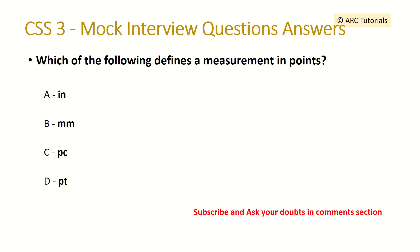Which of the following defines a measurement in points? The options given are: in, mm, pc, pt. The answer is option D — that is 'pt' for points.